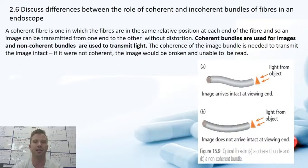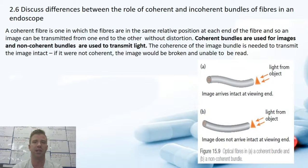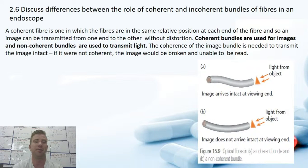2.6: Discuss the differences between the role of coherent and incoherent bundles of fibers in an endoscope. There are two differences between these: coherent bundles are used for images, while non-coherent or incoherent bundles are used to transmit light.